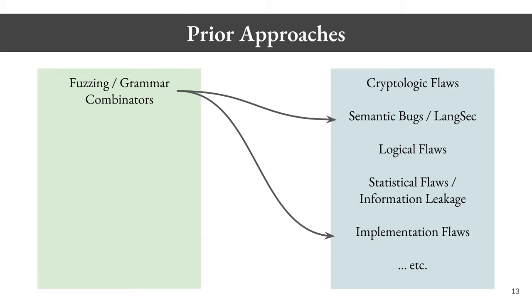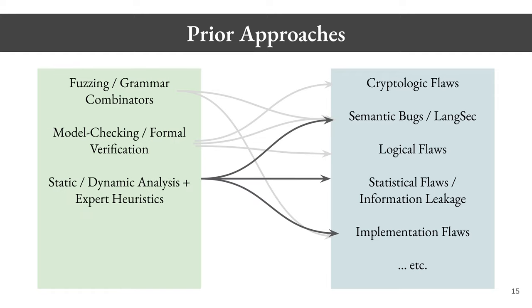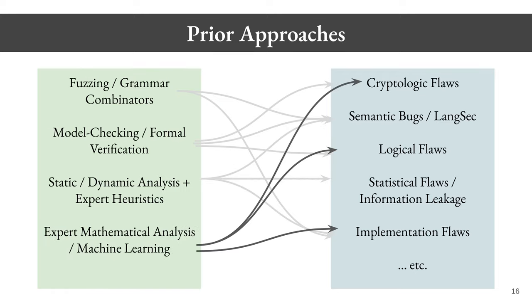Many prior approaches exist to address each of these problem domains. Fuzzing or grammar combinators are techniques that can exhaust an input space, usually in an intelligent rather than naive manner, in order to yield semantic bugs or implementation flaws. Model checking and formal verification are areas of formal methods often used to uncover cryptologic flaws, semantic bugs, or logical flaws. Many security researchers use different types of static or dynamic analysis, often motivated by expert heuristics — for example, extracting a control flow graph from a program and having expert heuristics about what constitutes a bad CFG. Many types of expert mathematical analyses exist, and I would argue that machine learning is a type of expert mathematical analysis — essentially the automation of statistics.